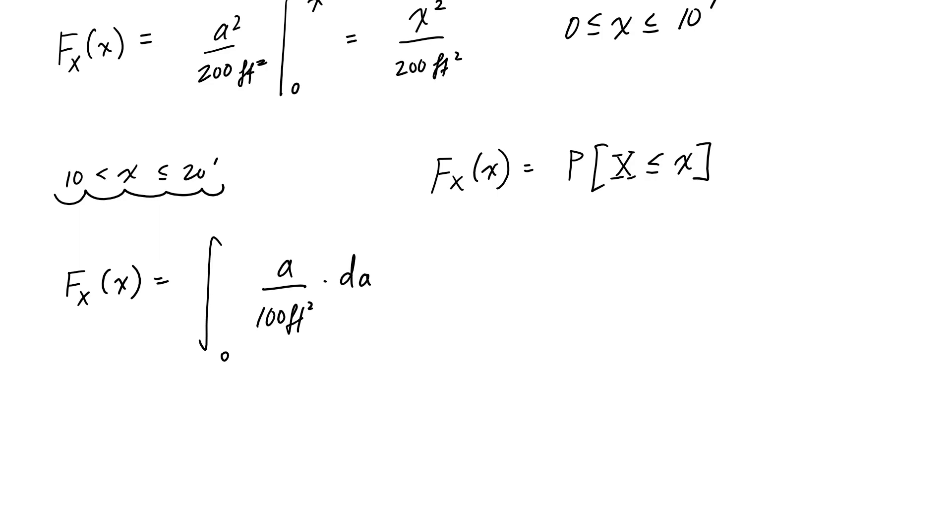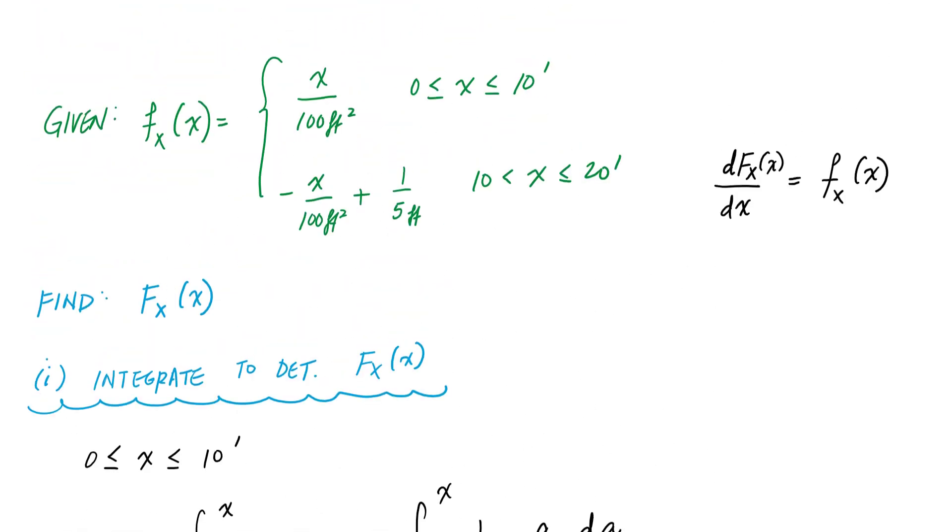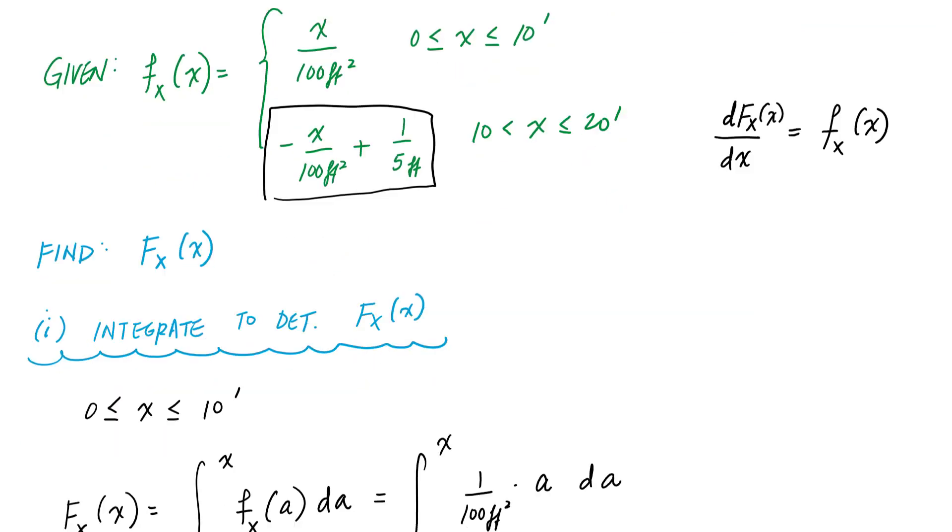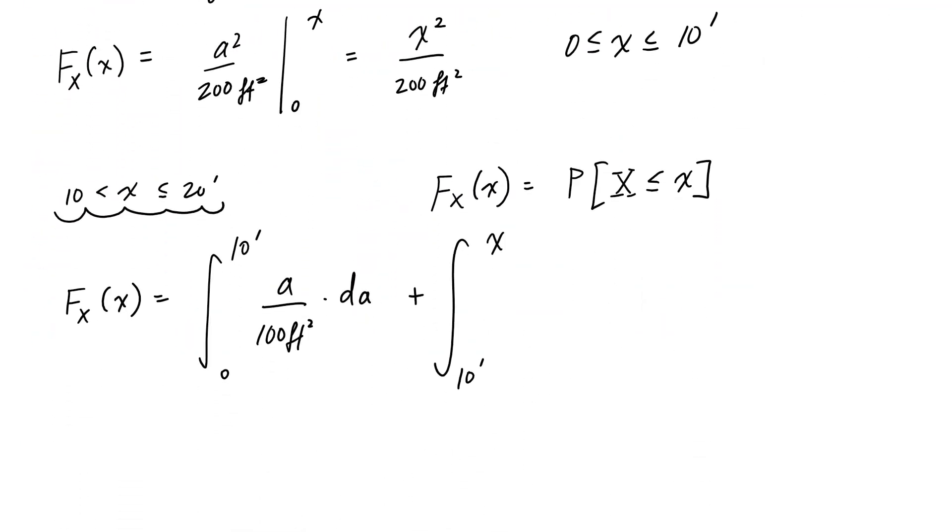And instead, because we know we're taking all of it, that's why we're doing from 0 to 10, plus from 10 feet to x, there's my open variable. And I'm going to use the second portion from 10 to 20 here with my dummy variable here. So this is going to be negative a over 100 feet squared plus 1 over 5 feet. And this is going to be da.